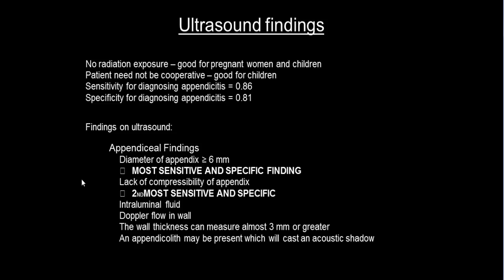The sensitivity of diagnosing appendicitis by ultrasound is 0.81. Key ultrasound findings include: appendix diameter of 6 mm or greater — the most sensitive and specific finding — and lack of compressibility of the appendix, which is the second most sensitive and specific sign. Intraluminal fluid is also highly specific. Wall thickness of 3 mm or greater and Doppler flow in the wall are additional findings.